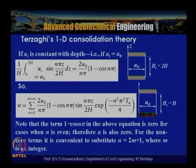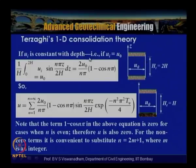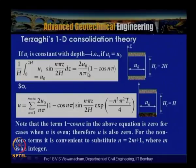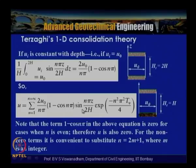For a doubly drained layer where ui = u₀ (constant), the coefficient An evaluates to: (1/h) ∫₀²ʰ ui · sin(nπz/2h) dz = (2u₀/nπ)(1 − cos nπ). Substituting back, the expression for u becomes: u = Σ(n=1 to ∞) [(2u₀/nπ)(1 − cos nπ)] · sin(nπz/2h) · exp(−n²π²Tv/4).